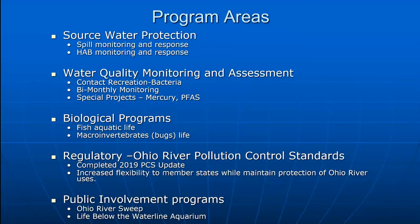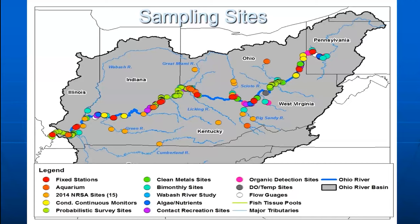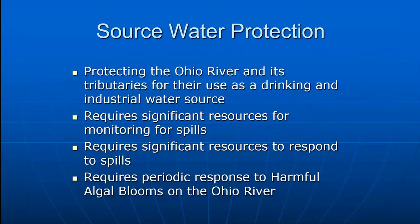We do water quality monitoring for recreation, bacteria monitoring, contaminant monitoring for human health and aquatic life, special projects — we just completed an extensive PFAS project on the Ohio River — and biological programs that are great indicators of water quality. When I hear about Helen's eDNA program, I'm very interested because having that baseline would be very useful for tracking fish, aquatic life, bugs, and macroinvertebrates as indicators of the health of a body of water like the Ohio River.